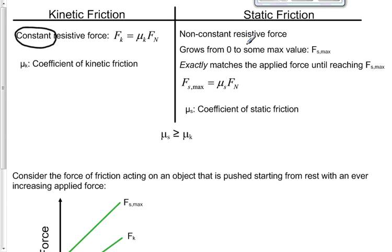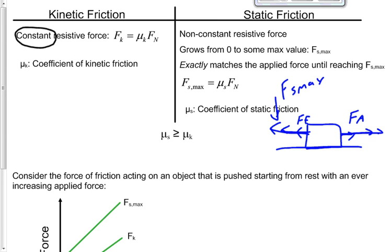Static friction is a non-constant resistant force. It actually changes, growing from 0 to some maximum value as you apply more force. If you have an object sitting on a surface and apply a force, the friction force will exactly match it. But if you push harder and harder, the static friction force will be harder and harder. Eventually, the static friction will reach a maximum value at Fs max. Once it does, then the object will start to move.